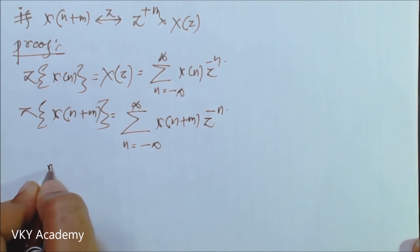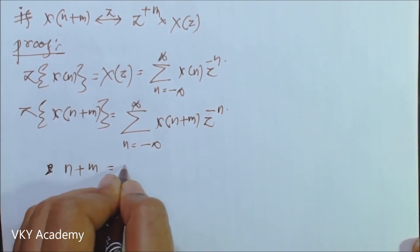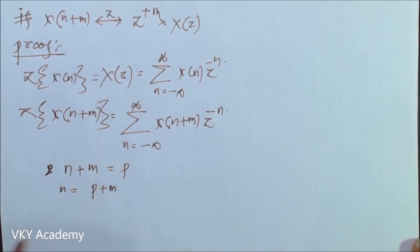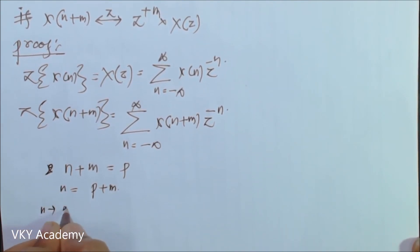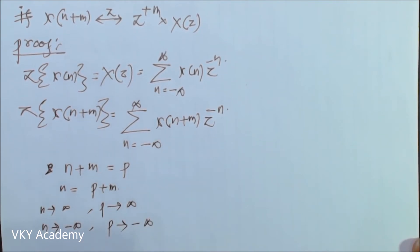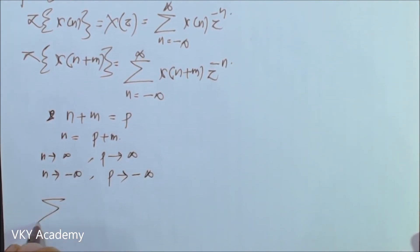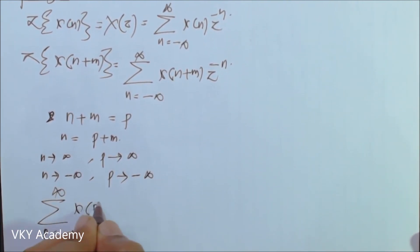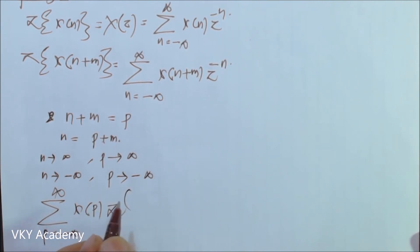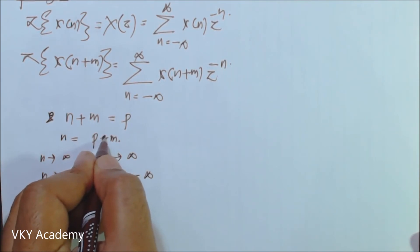The Z transform of x of n plus m equals the summation with variable substitution where n minus m equals p, so n equals p plus m. If n tends to infinity, p tends to infinity, and if n tends to minus infinity, p tends to minus infinity. Rewriting with variable p: summation p equal to minus infinity to infinity of x of p times z to the power minus of p minus m.